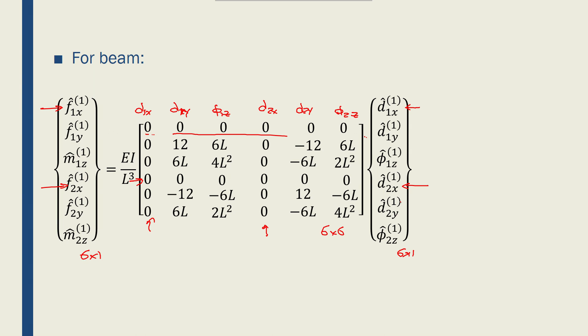So, I have two stiffness matrices, one for a truss, one for a beam, which are both 6 by 6. And I can use them to form the local stiffness matrix for a typical frame element.